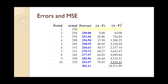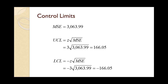For details on these calculations, review the tutorial on Measures of Forecast Quality. Given that z equals 3 and the mean squared error equals 3063.99, the upper control limit equals 166.05 and the lower control limit equals negative 166.05. Except for their signs, the upper and lower control limits will always have the same value. We know the centerline equals 0. We now have everything we need to produce the control chart.